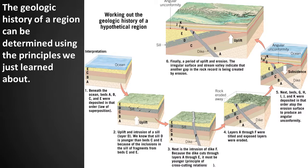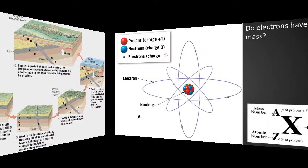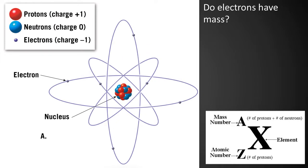First, we must review the parts of an atom. This figure shows an atom and its main subatomic particles. The three major subatomic particles are listed in the upper left-hand corner. The size of the symbol relates directly to the mass of the particle. Protons and neutrons exist within the nucleus of the atom. Electrons exist in orbits that encircle the nucleus. Electrons do have mass, approximately one-two-thousandth that of a proton or neutron.